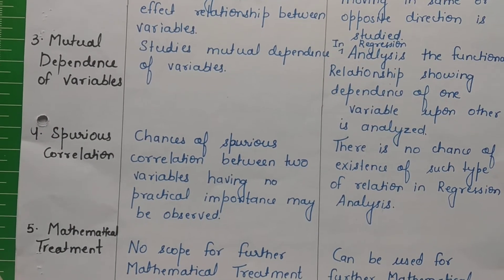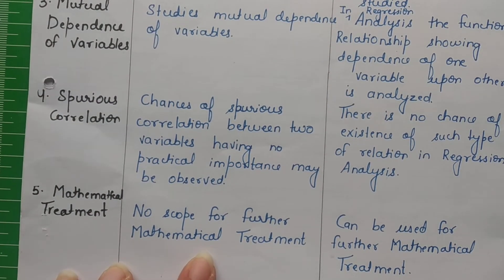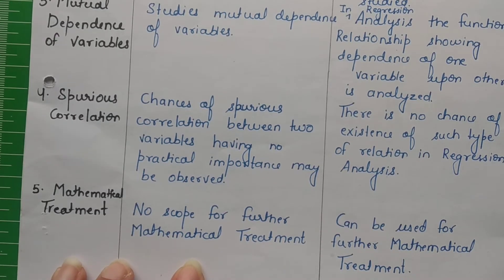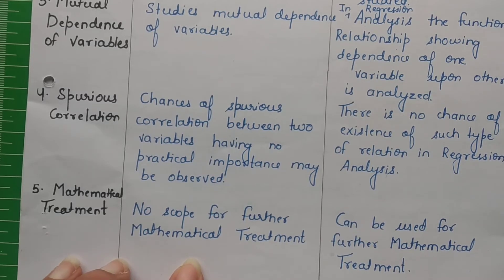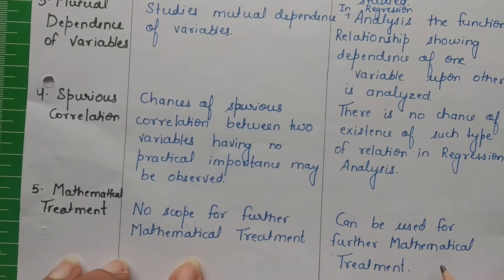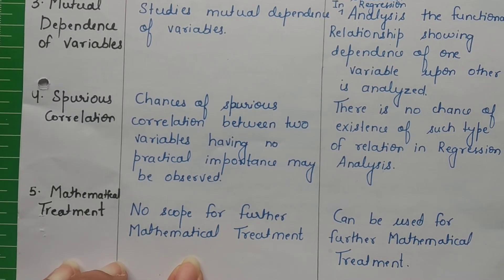Then we come to mathematical treatment. In the case of correlation, there is no further mathematical treatment possible — it cannot be used further. Just a value is obtained, we stop there, and draw a conclusion. We will not use it any further. But regression is capable enough of further mathematical treatment. That is why it is used in various research projects, in thesis, in PhD work, and everywhere. Wherever research tools are required, regression is used.